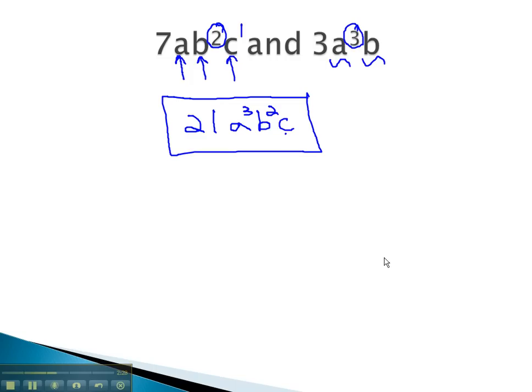Notice c was included in our least common denominator or least common multiple, even though it did not appear in the last monomial. It is not necessary for the factors to appear in every factor, as long as they appear somewhere.